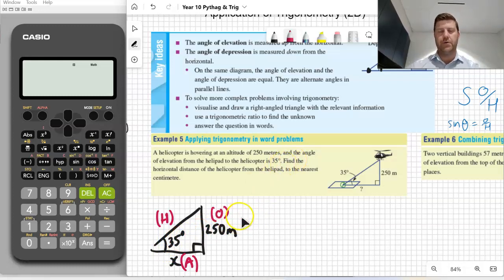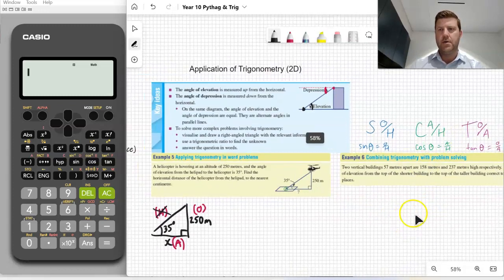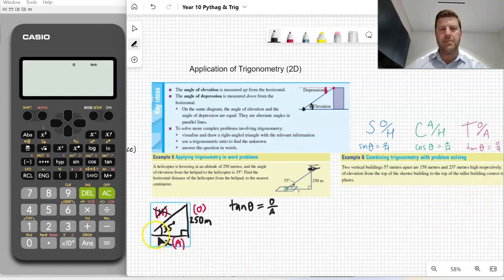Next step then is to determine what ratio we're going to use. Now we have an unknown here with A and a measurement here with O. So we're actually using those two sides, A and O, or adjacent and opposite. So we don't need the hypotenuse. So what ratio has O and A attached to it? It is the tangent ratio. So tan theta equals O over A. And you'll actually notice that most of the application questions you do will use the tan ratio, simply because it's easy to measure the horizontal and vertical distance. A bit harder to measure the hypotenuse.